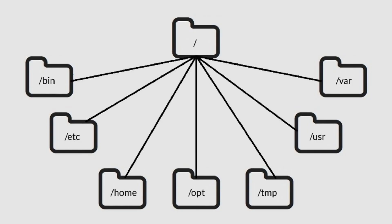What's unique in Linux is how storage is mounted. A mount simply means linking a partition to a specific directory in the tree. For example, if you have a separate home partition, Linux mounts that partition to the home directory. If you have a separate boot partition, it gets mounted to the boot directory, and so on. This method keeps the entire system unified under one tree, even if the data physically sits on separate partitions.